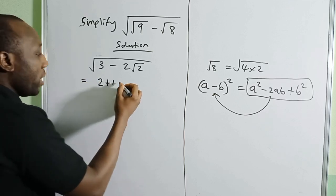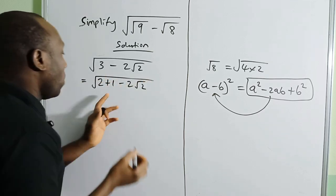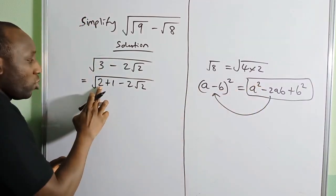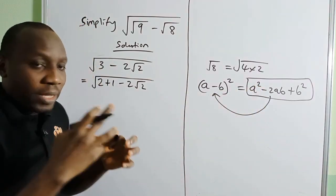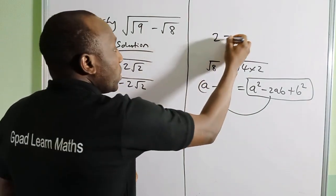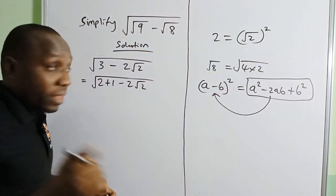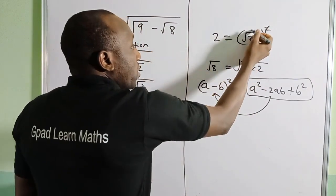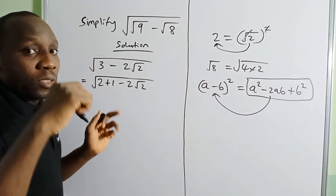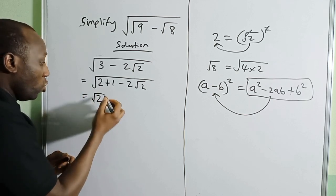Now we are getting close to this form, but we have a square here. Can I express 2 as a number that will have a square on it? Yes, because 2 = (√2)². If this square cancels the square root, it gives me back 2. So I'm going to express 2 as (√2)².